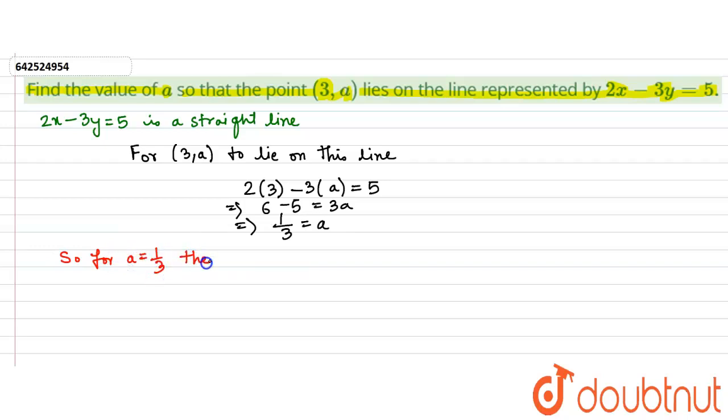The point (3, a) lies on 2x - 3y = 5. Thank you.